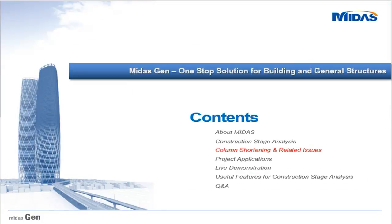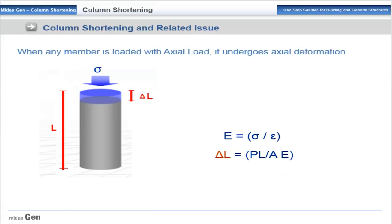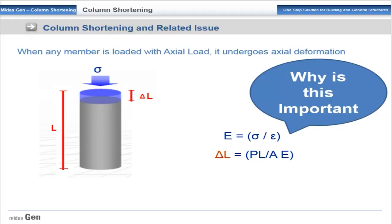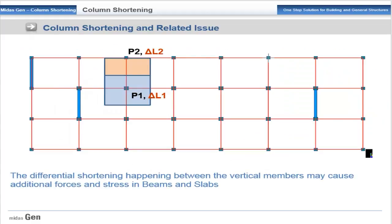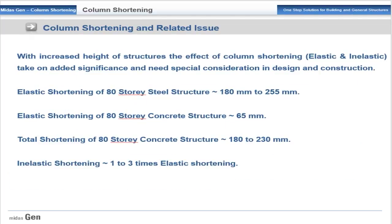That brings us to column shortening and related issues. When any member is loaded with axial loads, it undergoes axial deformation — PL/AE — following the linear elastic strain equation. Shortening won't be the same for all vertical members: Column P1 will have deflection delta L1 and Column P2 will have deflection delta L2. This differential shortening in vertical members may cause additional forces and stresses in beams and slabs. Column shortening effect becomes more significant with increase in height of structure.